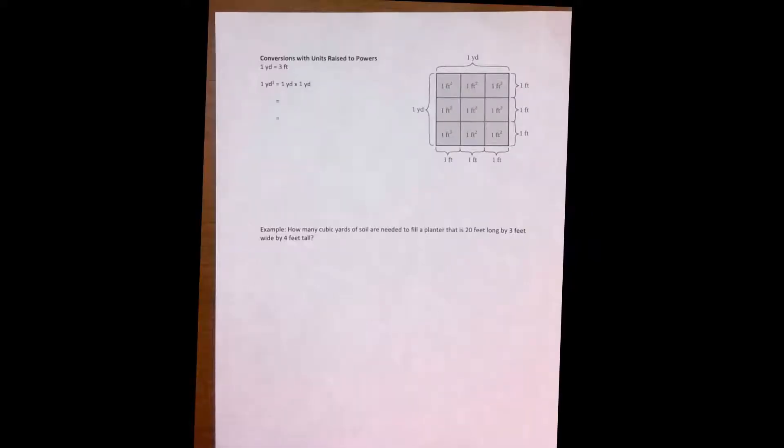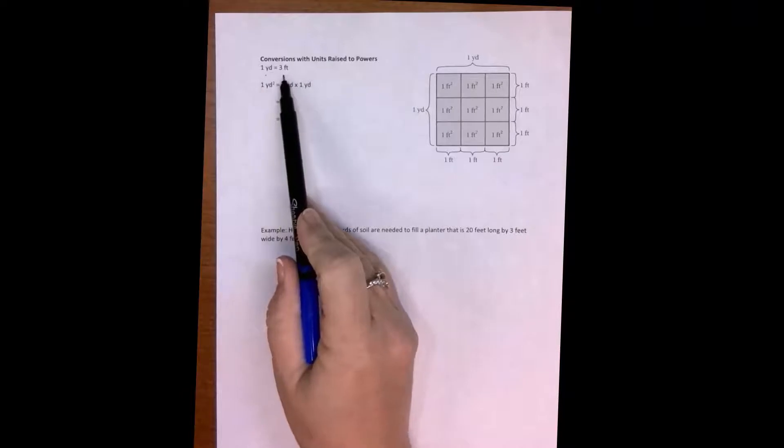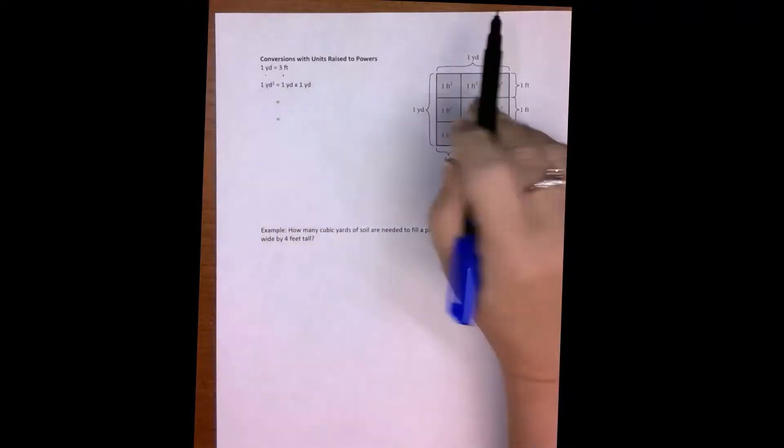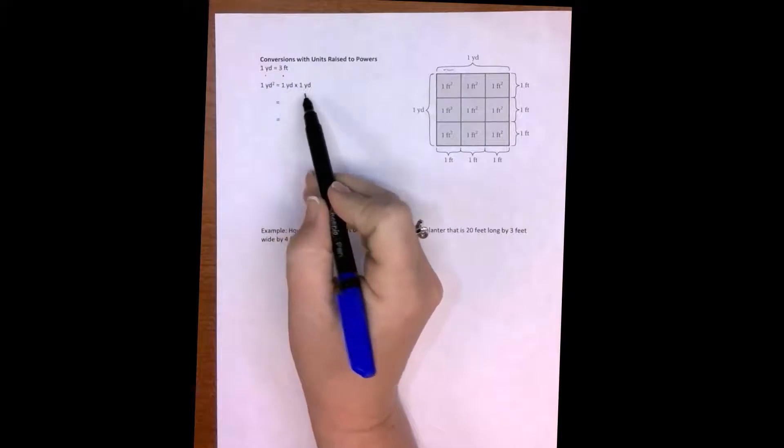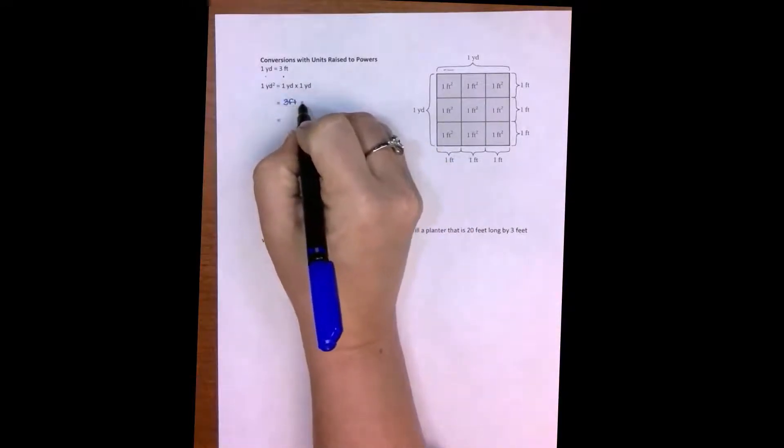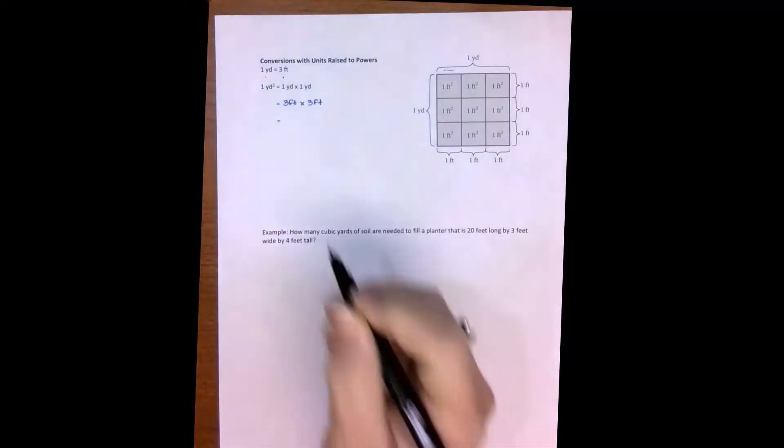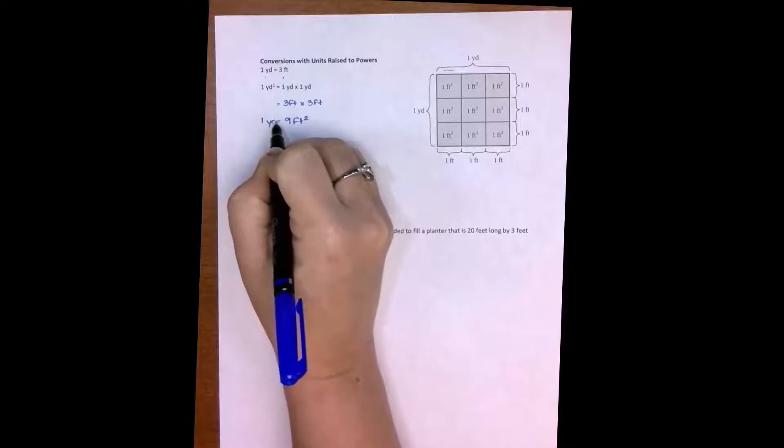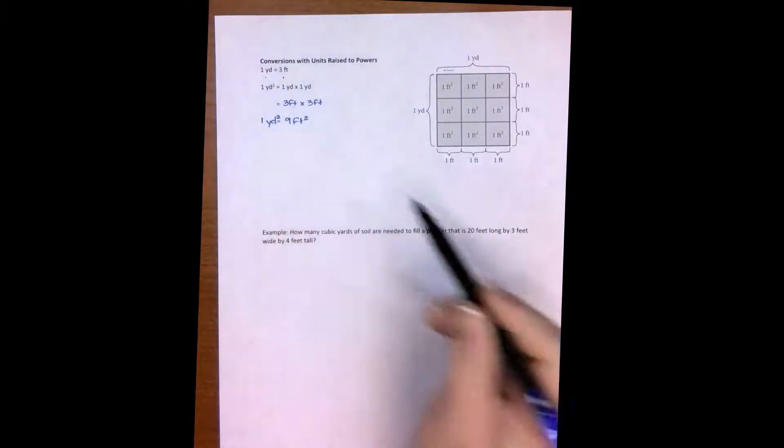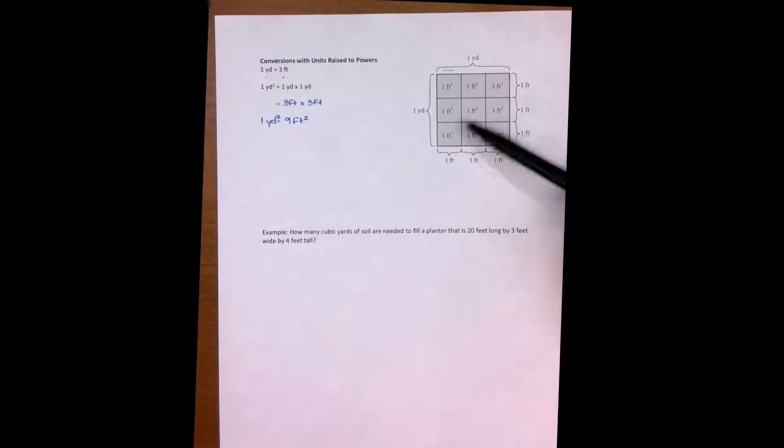We want to talk now about unit conversions when some of the units are raised to a power. Let's start with talking about yards and feet. We know one yard is three feet. So one yard squared is one yard times one yard. If I instead now think about these yards as feet and I say it's three feet times three feet, three times three is nine feet, times feet is feet squared. So one yard squared becomes nine feet squared. And you can see that here: one, two, three, four, five, six, seven, eight, nine. You have to remember to do that in conversions where the units have powers.